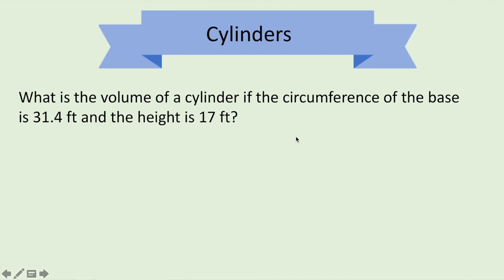Let's try this problem. Now this problem is a little different. This is telling me the circumference of the base. So I've got the volume of a cylinder. Volume of a cylinder formula. Pi r squared h. 3.14 times the radius squared times the height, which is 17. Where am I going to find this radius from?